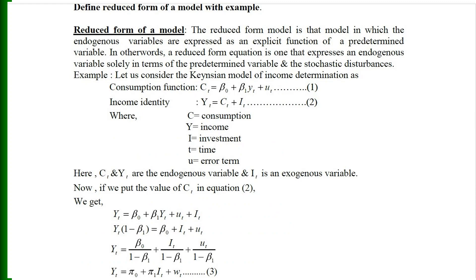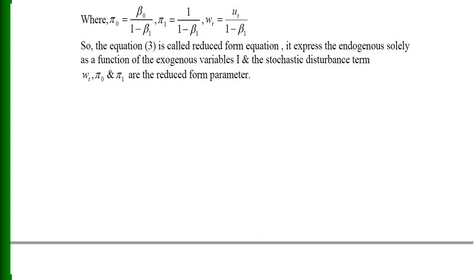Substituting equation one into equation two, we get Y_t = β₀ + β₁Y_t + u_t + I_t. Simplifying for Y_t gives: Y_t = (β₀ + I_t) / (1 − β₁) + u_t / (1 − β₁). Finally, we can write: Y_t = π₀ + π₁I_t + w_t, where π₀ = β₀ / (1 − β₁), π₁ = 1 / (1 − β₁), and w_t = u_t / (1 − β₁). This equation is the reduced form equation expressing the endogenous variable exclusively as a function of the exogenous variable I_t and the stochastic disturbance w_t. π₀ and π₁ are the reduced form parameters.